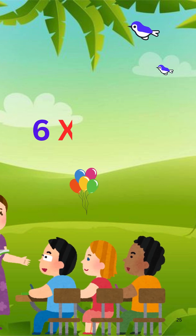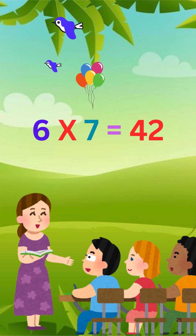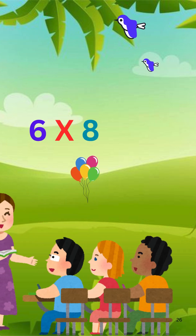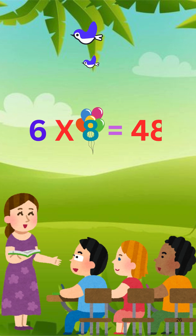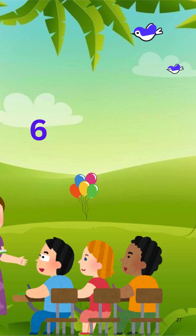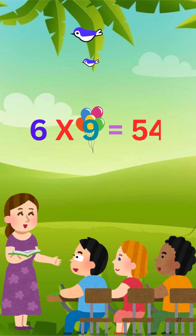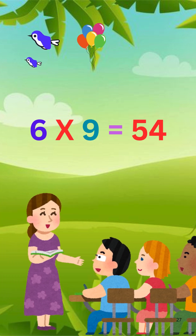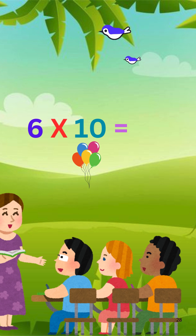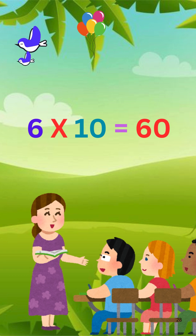6 x 7 is 42. 6 x 8 is 48. 6 x 9 is 54. 6 x 10 is 60.